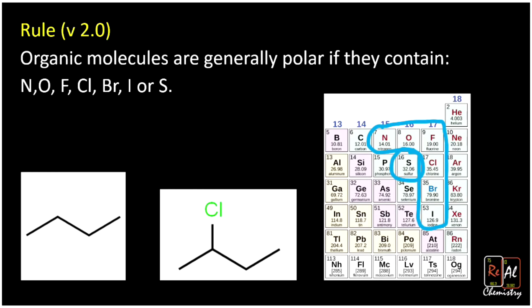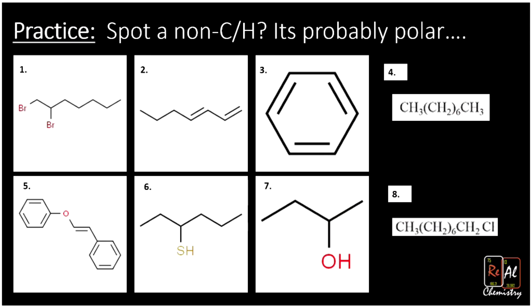And let's go ahead and practice and apply that to a bunch of different molecules. Here's all we're going to do. We're going to look and see if we can spot something that's not carbon or hydrogen. If it has anything that's not carbon or hydrogen, then it's probably polar. So we look at molecule one. We see that it has bromine. And because it has bromine, we're going to say, hey, you know what? That's polar. Then we look at molecule two. It has some double bonds, but still only carbon and hydrogen. And so that's going to be nonpolar.